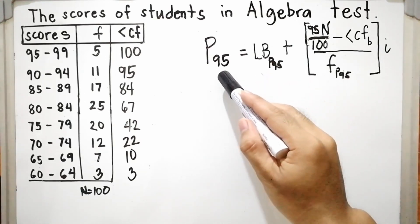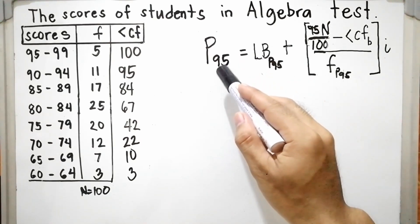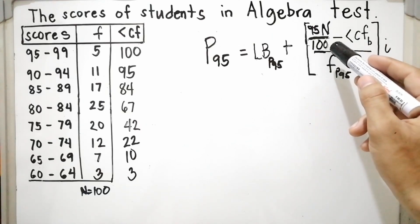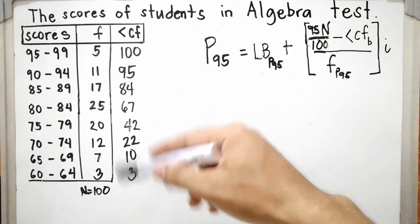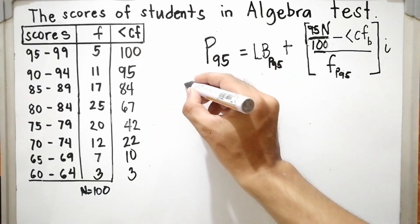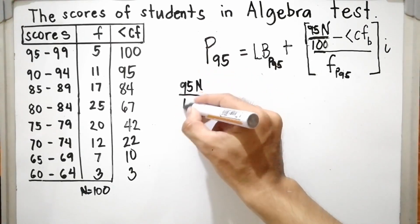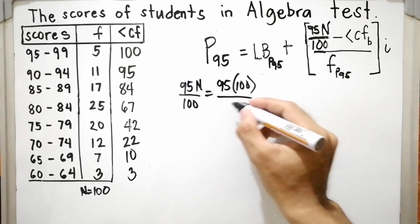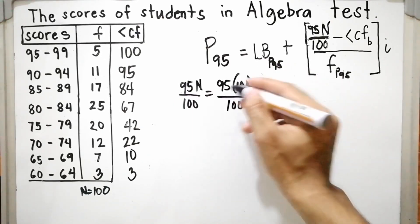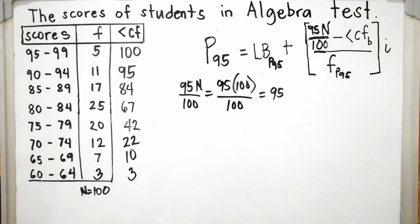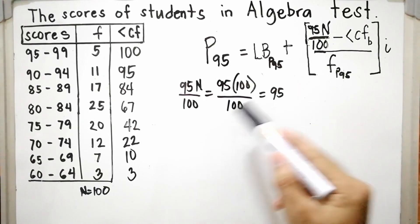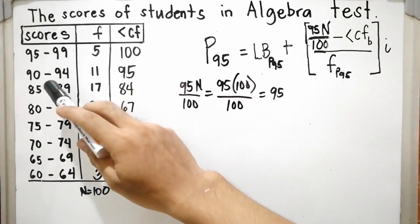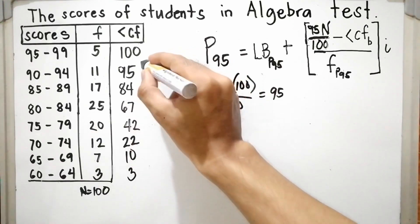Now let us calculate P sub 95. The first step is to locate P sub 95. The formula is 95 times N divided by 100, since we are dividing the distribution into 100 equal parts. So 95 times 100 over 100 equals 95. Next, locate 95 in the less than cumulative frequency. P sub 95 is included in the class 90 to 94, since 95 falls in that cumulative frequency range.